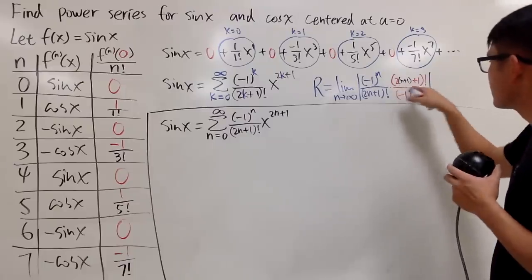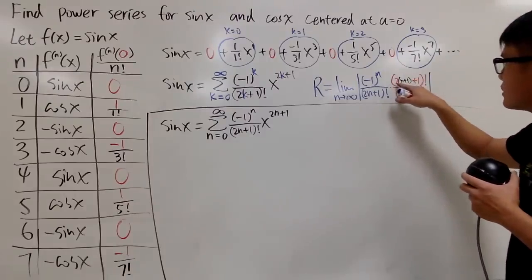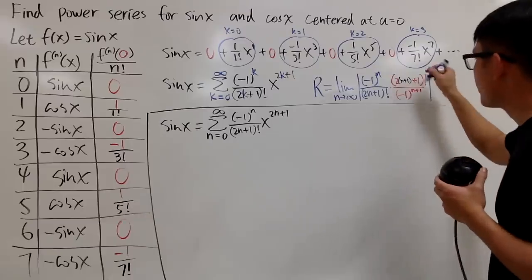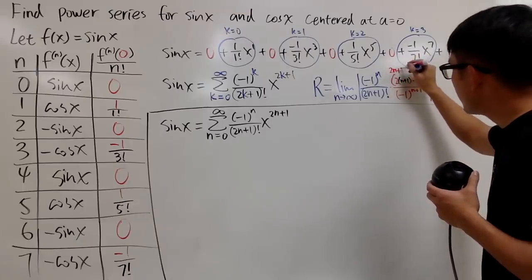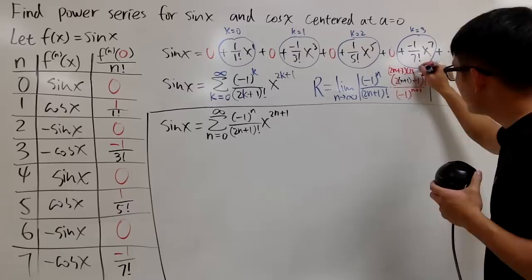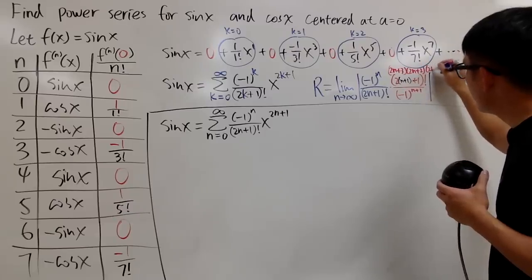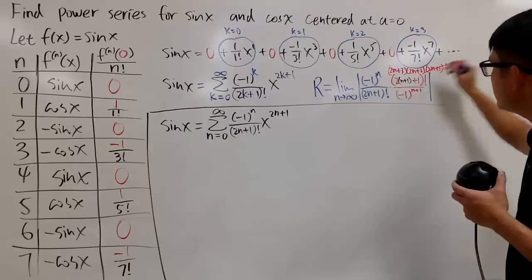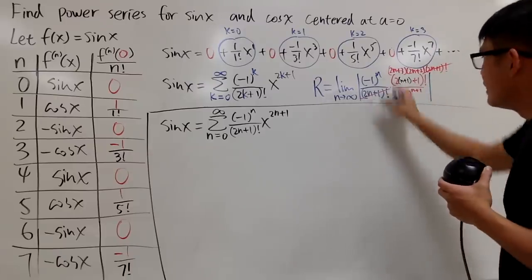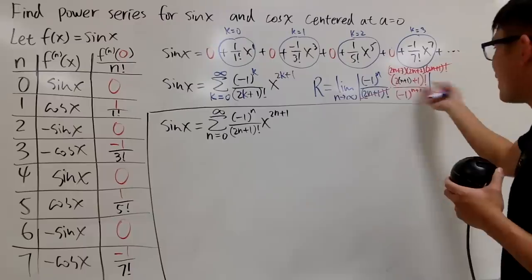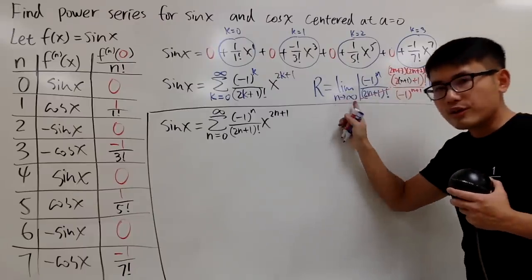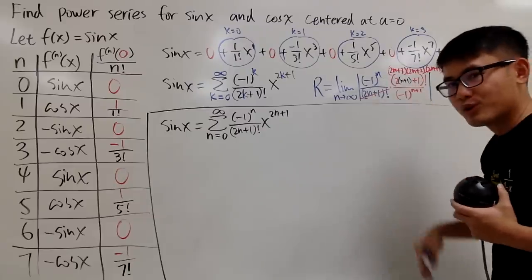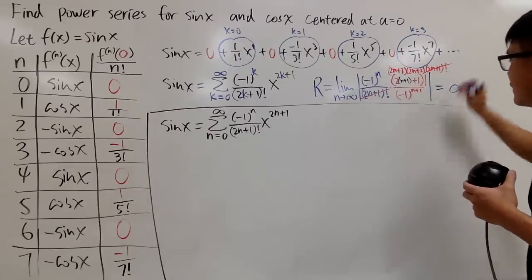Now, simplify the factorials. Let's look at the bigger factorial. This right here is 2n plus 2 plus 1, namely 2n plus 3. Do the factorial. You can just write this as 2n plus 3 times 2n plus 2, and then 2n plus 1, and so on. You can just put a factorial here, and you see this and that cancel. The negative 1 to the whatever power in the absolute value, they don't matter. And now, when n goes to infinity, you have this on the top, so they will go to infinity.